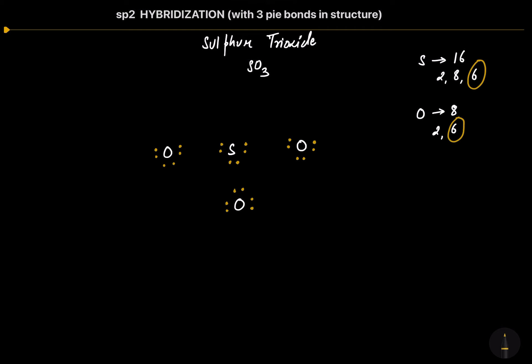Now let's make the bonds. All the 3 oxygen atoms are going to form 2 bonds each with the sulfur to attain the octet in its valence shell. So that's the 1st bond and the 2nd bond of the 1st oxygen atom with the sulfur. Now let's come to the 2nd oxygen — that's the 1st bond and the 2nd bond. And the 3rd oxygen — that's the 1st bond and the 2nd bond.